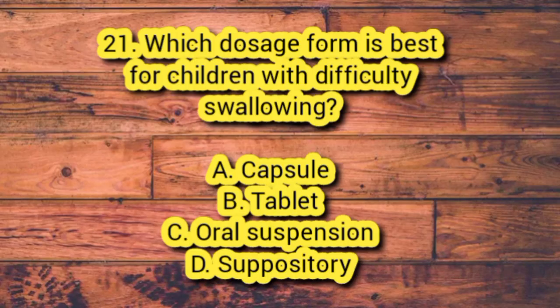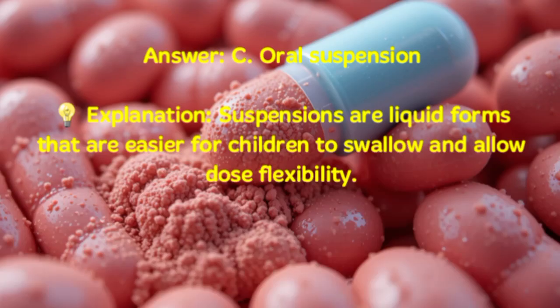Number 21. Which dosage form is best for children with difficulty swallowing? A. Capsule. B. Tablet. C. Oral suspension. D. Suppository. Answer: C. Oral suspension. Explanation: Suspensions are liquid forms that are easier for children to swallow and allow dose flexibility.